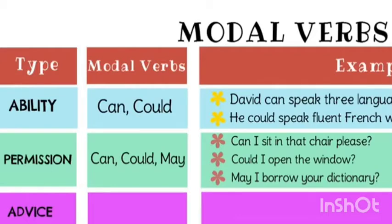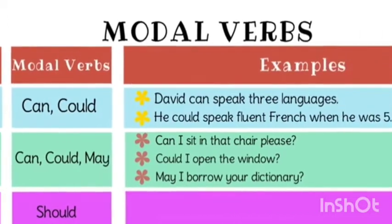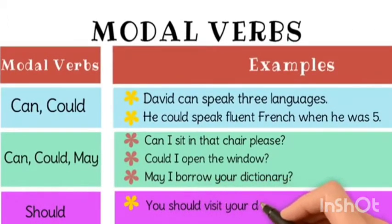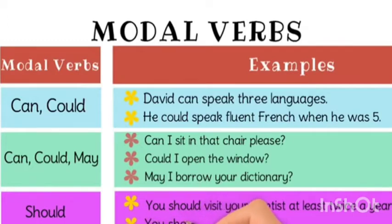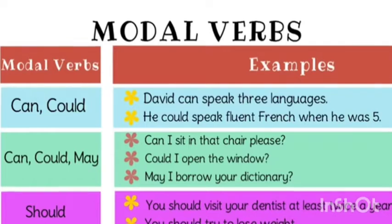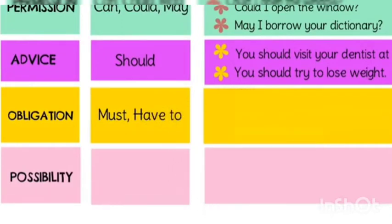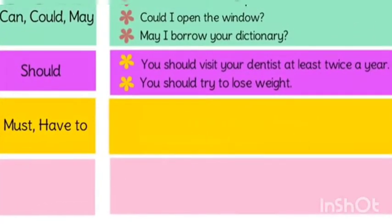Example three: May I borrow your dictionary? Now we have seen ability and permission. For obligation and duty, we use must or have-to.